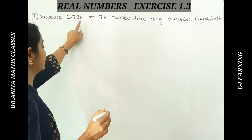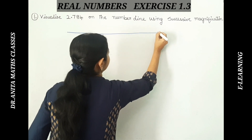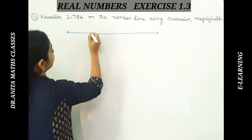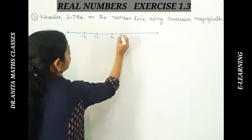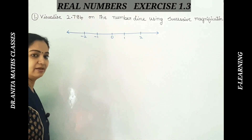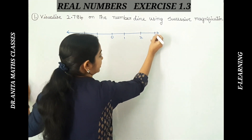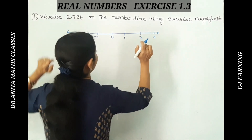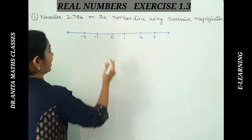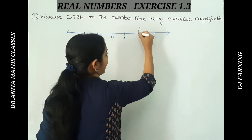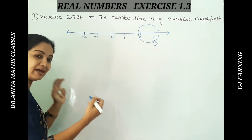2.784 is a terminating decimal — it is not recurring or non-terminating. On the number line, since 2.784 is after 2 and below 3, the number lies between 2 and 3. I'll draw a number line with negative numbers on one side and positive numbers on the other. The number 2.784 should lie exactly between 2 and 3, so I will place a magnifying glass over that region.